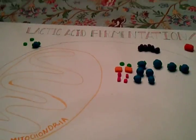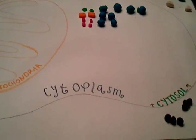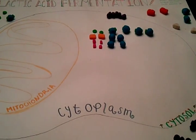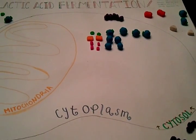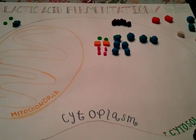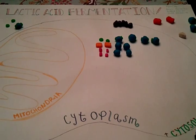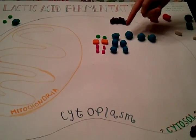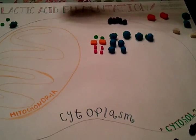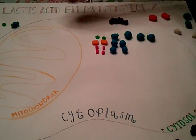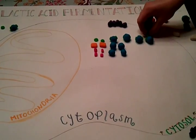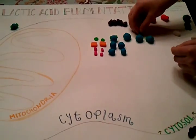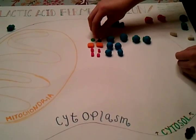The next phase in glycolysis is called energy payoff. This phase is initiated when 4 ADP molecules are phosphorylated through substrate level phosphorylation, gaining 4 phosphate groups and ultimately forming 4 ATP.